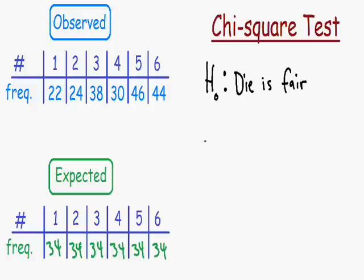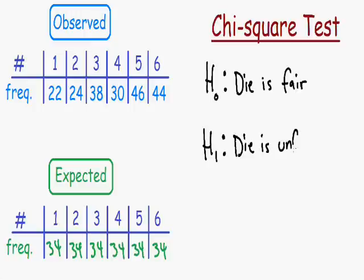Now let's state the alternative hypothesis, written as H₁ or Hₐ. The alternative hypothesis is always the opposite of the null hypothesis. Since the null states the die is fair, the alternative hypothesis states that the die is unfair. This means the observed values are not close to the expected values. After performing this test, we'll find out whether to accept the null hypothesis (die is fair) or the alternative hypothesis (die is unfair).